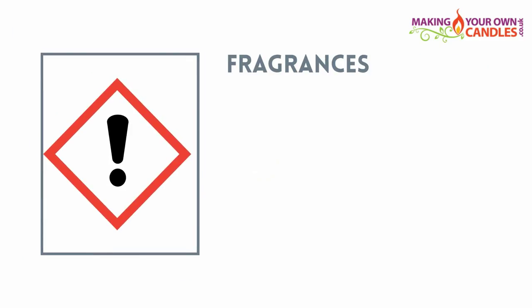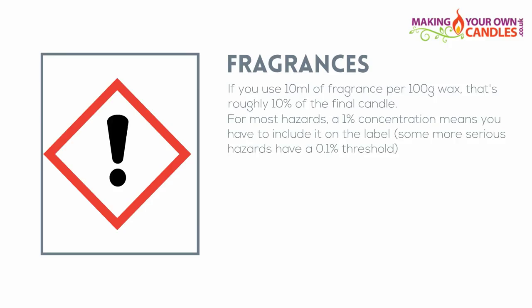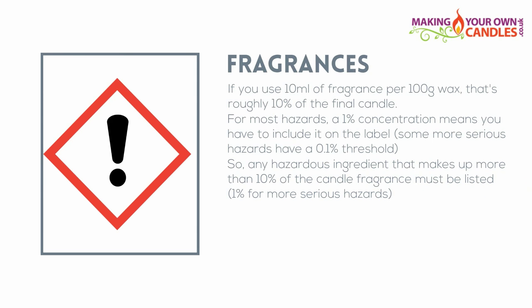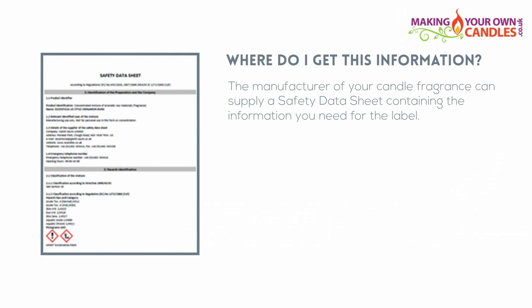Let's look at an example. For most of our fragrances we recommend using 10ml of fragrance for every 100g of wax, meaning the fragrance will make up no more than 10% of the final candle. For most hazardous ingredients, a 1% concentration in the final product means you have to include it on the label; some more serious hazards have a 0.1% threshold. In other words, any hazardous ingredient that makes up more than 10% of the candle fragrance must be listed — or 1% for the more serious hazards. You can get this information from a safety data sheet obtained from the manufacturer or supplier of your candle making fragrance.